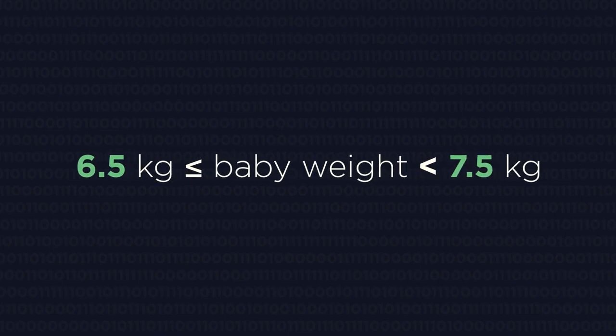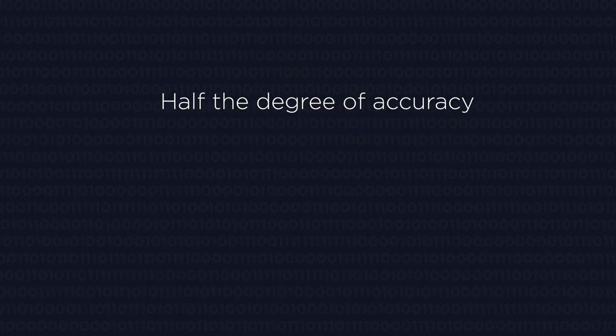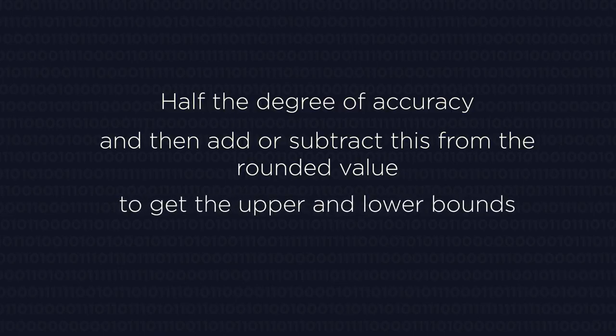If you find it difficult to visualize what the upper and lower bounds are, then there's a really simple method that will help. Half the degree of accuracy and then add or subtract this from the rounded value to get the upper and lower bounds.